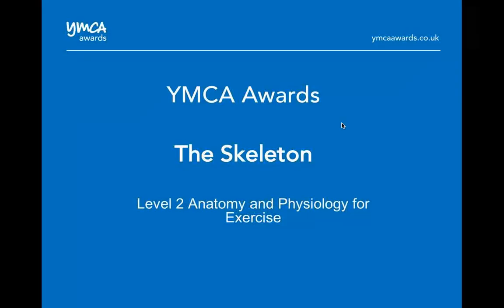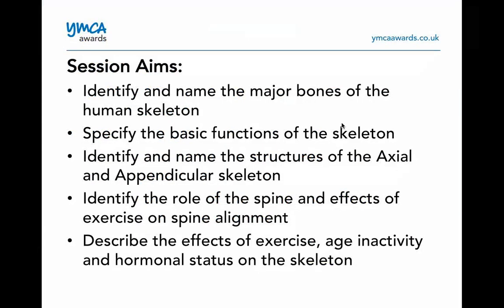The first section we're going to look at is the skeleton. We're going to talk about the major bones, look at the basic functions of the skeleton, and look at the different structures — so the axial and the appendicular skeleton. We're going to identify the role of the spine and how it affects exercise and spine alignment, and describe the effects of exercise in terms of age, inactivity, and hormone status on the skeleton. The bottom section is not a huge area, but we cover it enough just so that you know it.